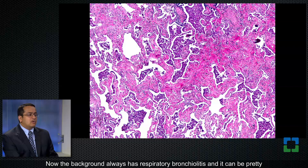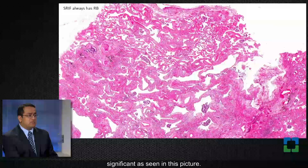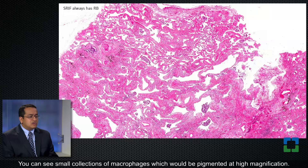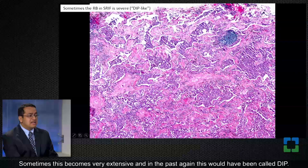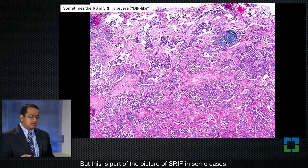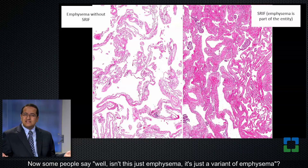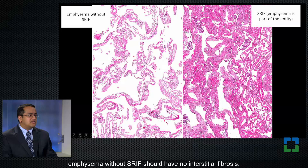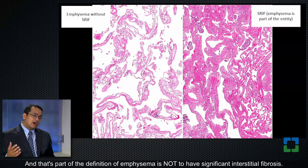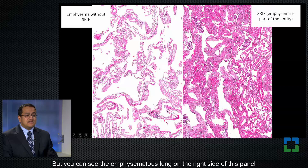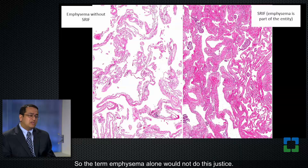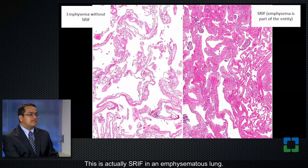The background always has respiratory bronchiolitis, which can be pretty significant — you can see small collections of macrophages that would be pigmented at high magnification, and sometimes this becomes very extensive. In the past, this would have been called DIP, but it is part of the picture of SRIF in some cases. Some people ask whether this is just a variant of emphysema — but it is not. Emphysema without SRIF should have no interstitial fibrosis by definition, whereas in SRIF the emphysematous lung is actually very significantly fibrotic. The term emphysema alone would not do this justice.